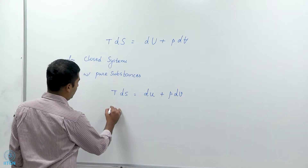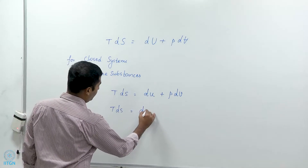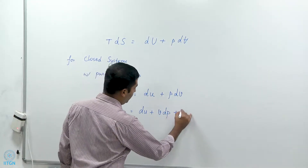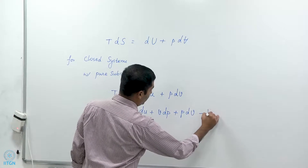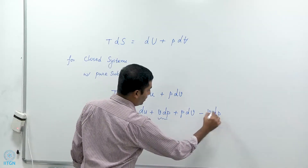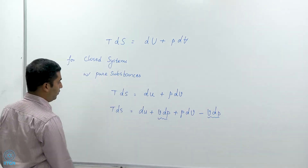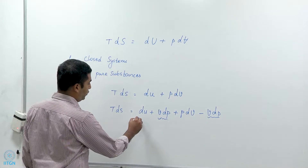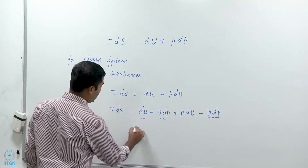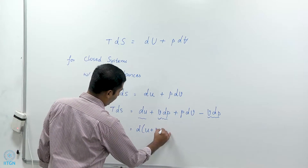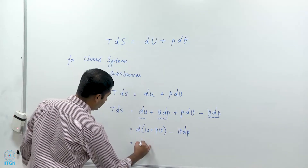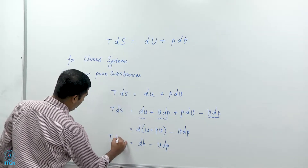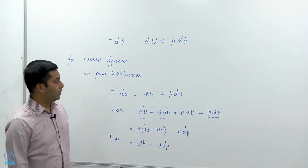The other way of writing it is T ds equals du plus v dp plus p dv minus v dp. This term has been added and subtracted, and we know that v dp plus p dv is d of pv. So I can write this as d of u plus pv minus v dp, which I can write as dh minus v dp. So those are different ways of expressing the same equation.